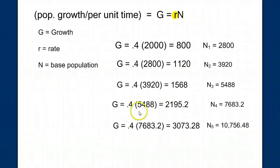Let's continue. We see that the next month, we have an additional 2,195.2. Well, you can't have 0.2 of a mouse, but that's what the math works out to be, which brings our population up to over 7,600. And the next month, we multiply our rate of growth times that number, and we add 3,000 the next month.